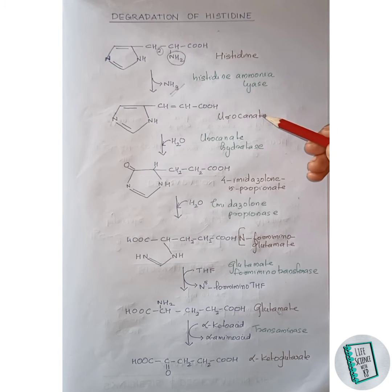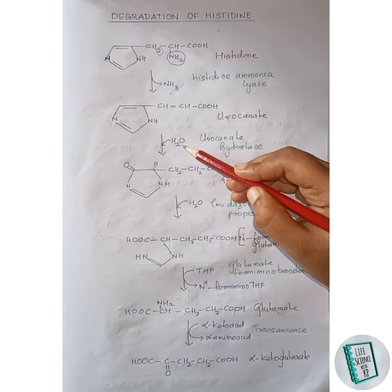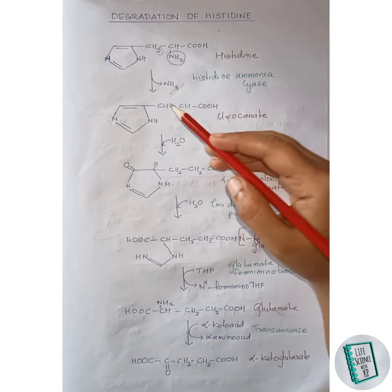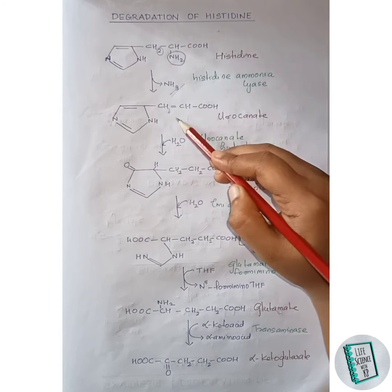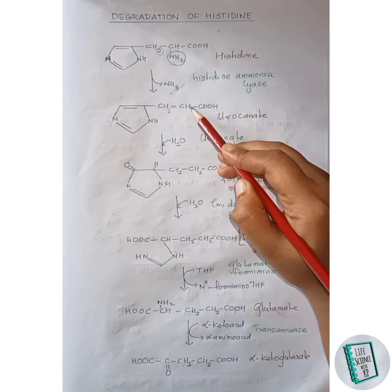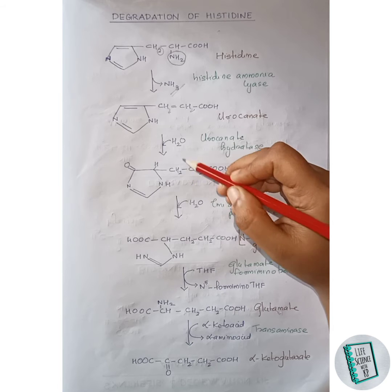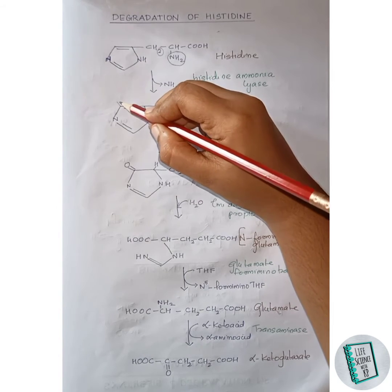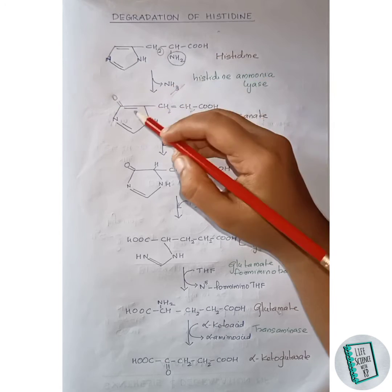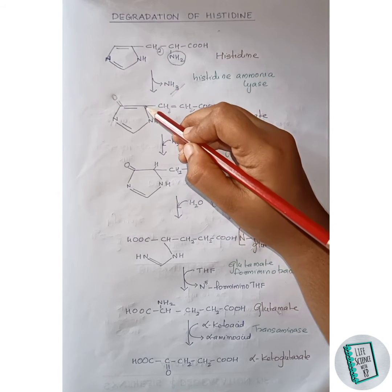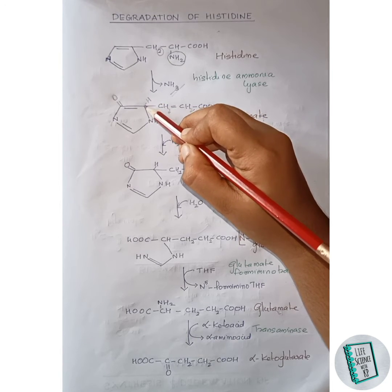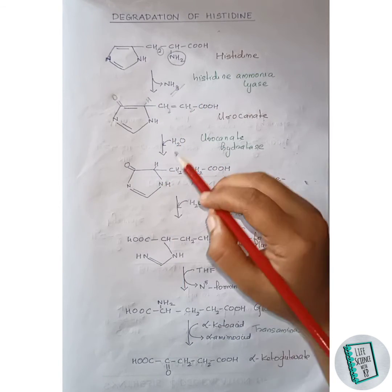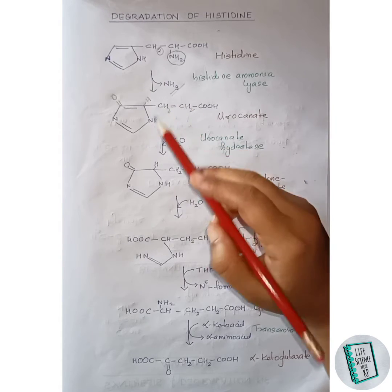In the next step, urocanate in the presence of urocanate hydratase forms 4-imidazolone-5-propionate. Addition of a water molecule occurs: one hydrogen of water attaches to the CH forming CH2, another hydrogen attaches to the adjacent carbon forming CH2, and the remaining oxygen attaches to that carbon forming a double bond C=O.